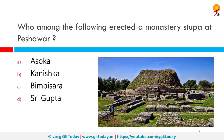Who among the following erected a monastery stupa at Peshawar? The correct answer is Kanishka. The Kanishka stupa was a monumental stupa established by the Kushan King Kanishka during the 2nd century CE in today's Shaji Ki Dheri on the outskirts of Peshawar in Pakistan.